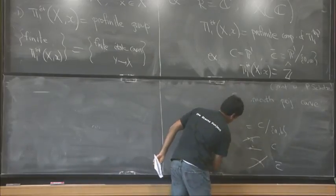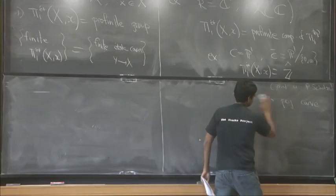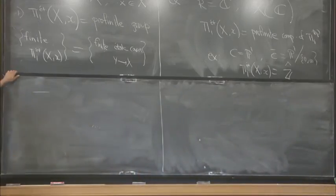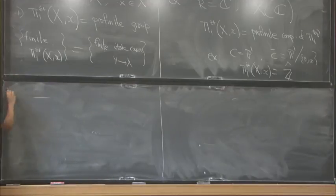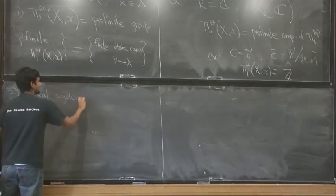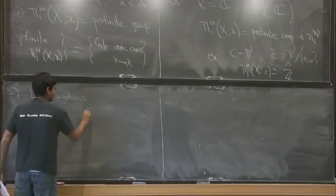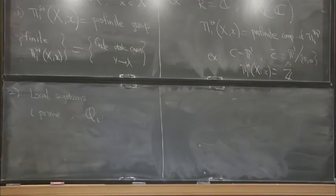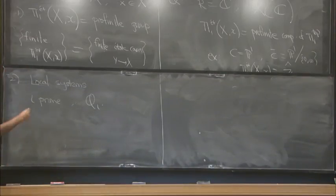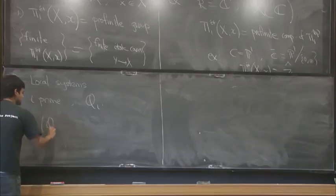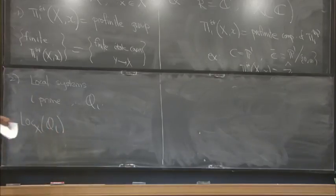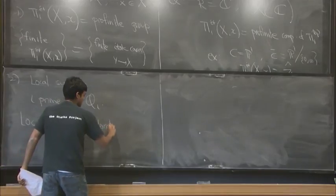On the other hand, one also has certain other invariants one can define in algebraic geometry, which are not somehow profinite. So that's the second set of invariants I want to talk about, which is local systems. So for this I need to fix a prime number l. All constructions take place relative to this prime number. And so associated to this prime, one has the ring Q_l. This is a field of l-adic integers or l-adic numbers.